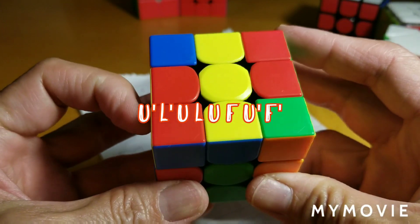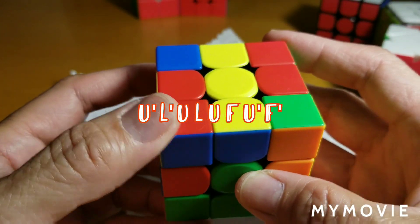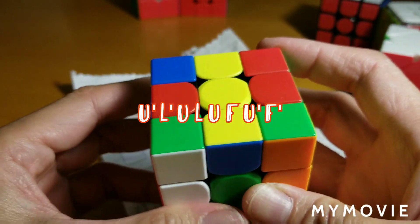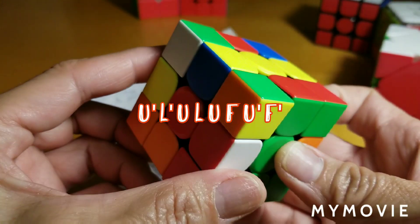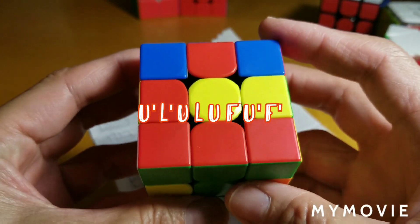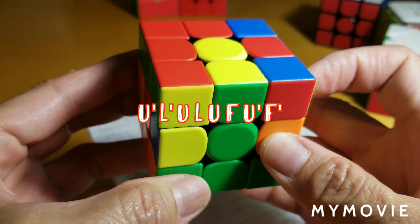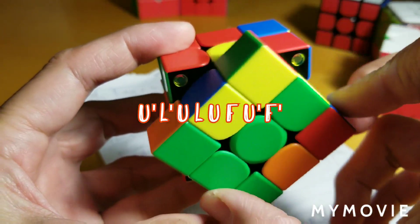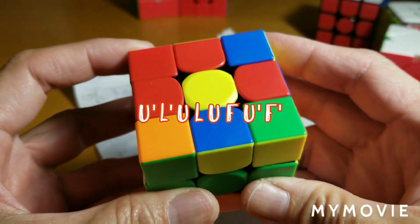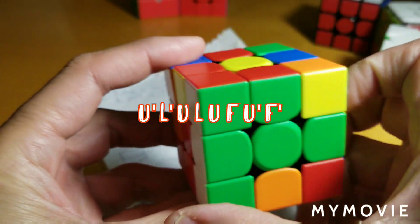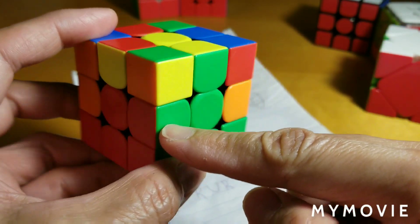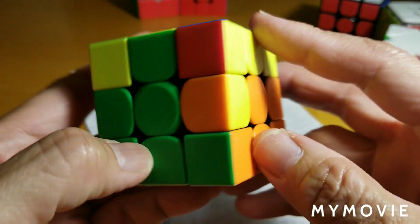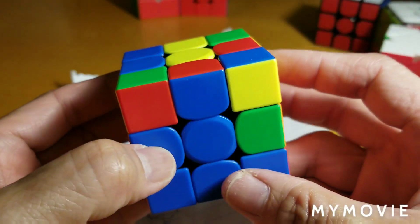U prime. Okay. U prime. L prime. L prime. U. U. L. L. U. U. F. F. U prime. U prime. F prime. F prime. Hey, look. There it is. Now you have two slots in the correct spot.